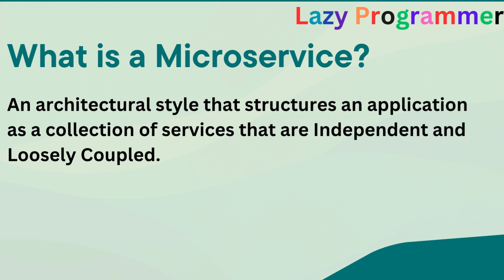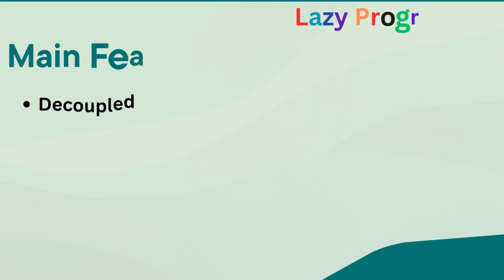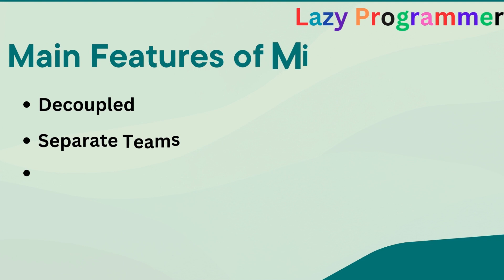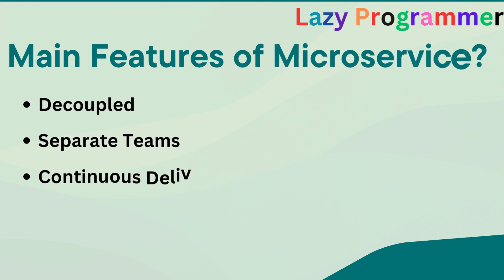Microservices also support polyglot programming — services don't need to share the same technology stack, libraries, or framework. A development team can select any technology suitable for their functional needs. For example, one microservice can be developed using Java, another using .NET, and a third using Python.